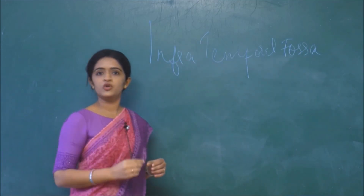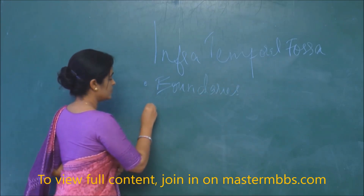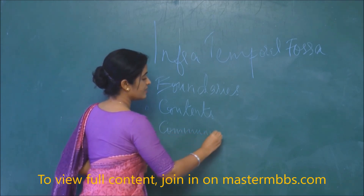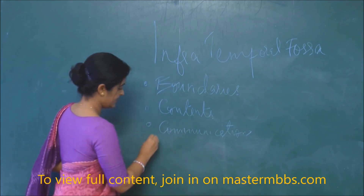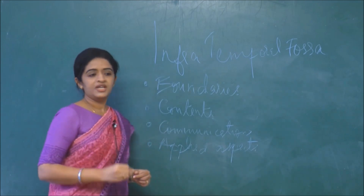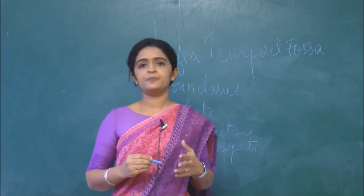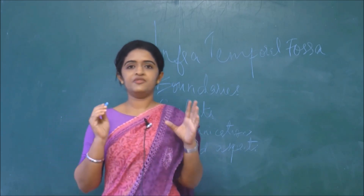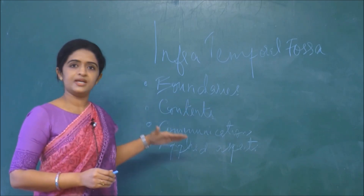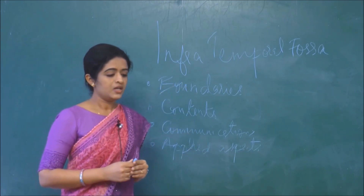This topic is dealt under the following headings: first, the boundaries of the infratemporal fossa; then the contents; then the communications; and finally the applied aspect - why you need to study this topic and where you will come across the infratemporal fossa. For a 5-mark question, cover boundaries, contents in detail, communications, and applied aspect. For a 3-mark question, just mention the contents without detail.